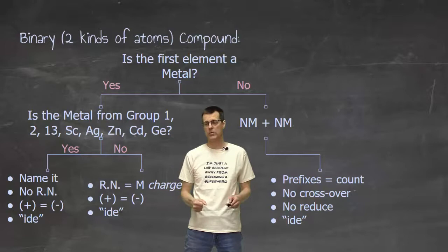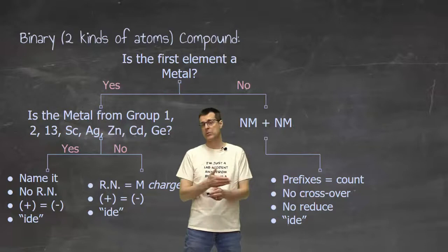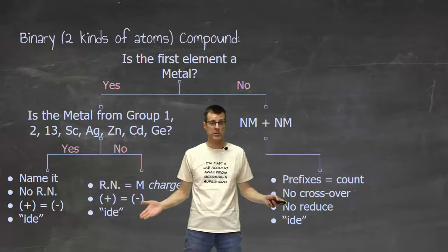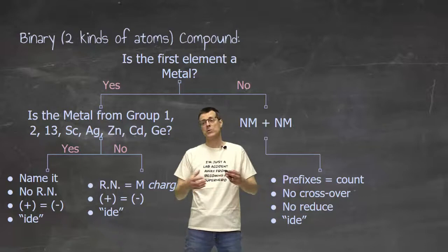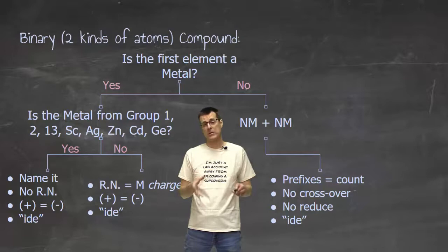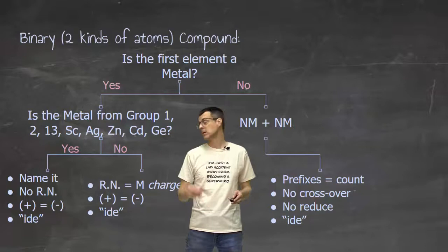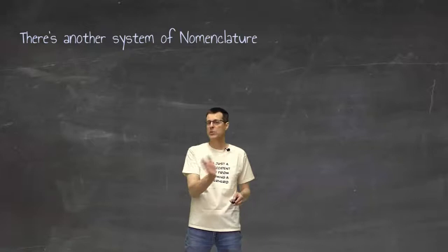Key things with a nonmetal nonmetal compound is we don't do a crossover and we don't reduce. The reason we don't do a crossover is because there's no charges. No positive, no negative. So I don't have to worry about matching those two things up. The reason I don't reduce is the way the large aggregate of those compounds or those atoms exist. Do they exist as true molecules or not? And I still end in the end of name with IDE. Okay, so that is the nomenclature we've done up to this point.